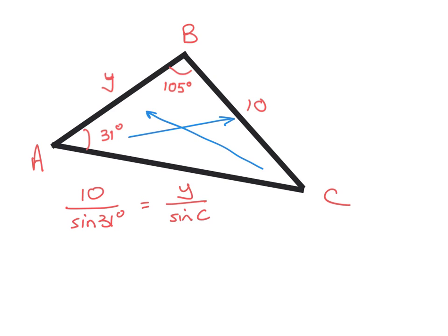We don't know C, but we do really, because we know the angles in a triangle add up to 180. So 180 minus 105 minus 31 will equal angle C, and angle C will therefore be 44 degrees.